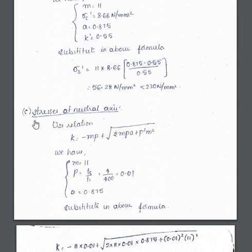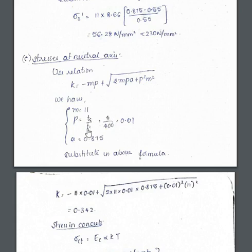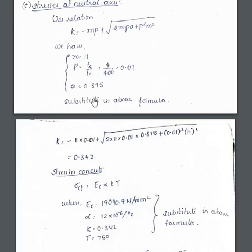Compression zone and tension zone analyses are complete. Now at the neutral axis, we use the relation: k = −mp + √(2mpa + p²m²). The k value changes in every case while all other values remain the same. Here p = Ts / Tc, where Ts is the equivalent area of the steel ring and Tc is the chimney thickness of 400 mm, giving p = 0.01. With a = 0.875, substituting all values gives k = 0.342.